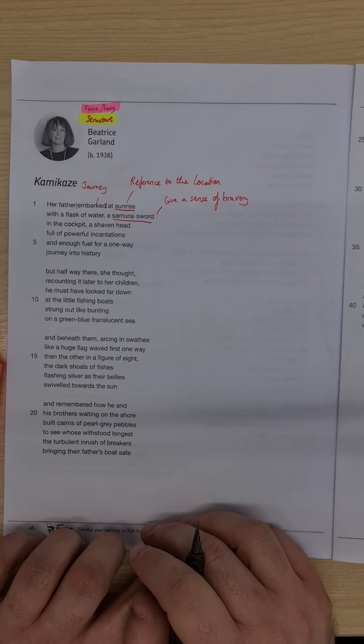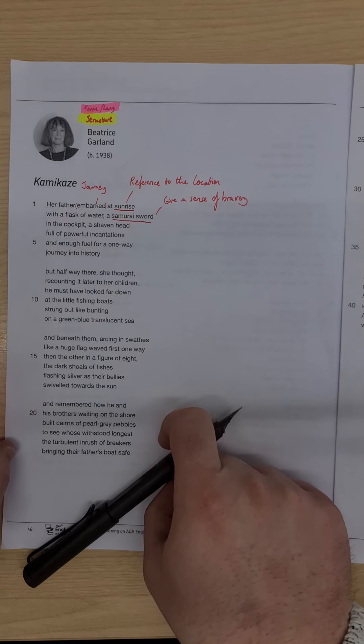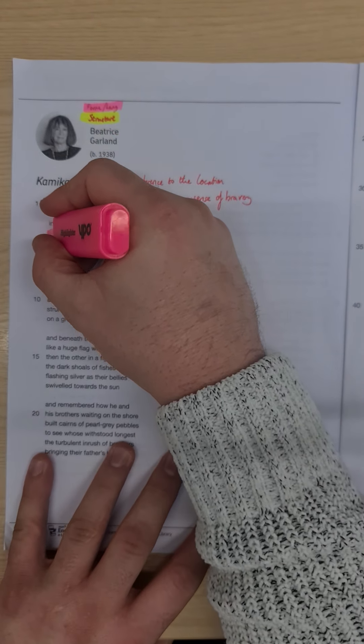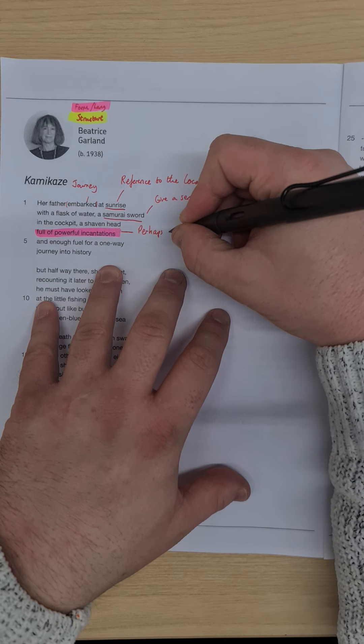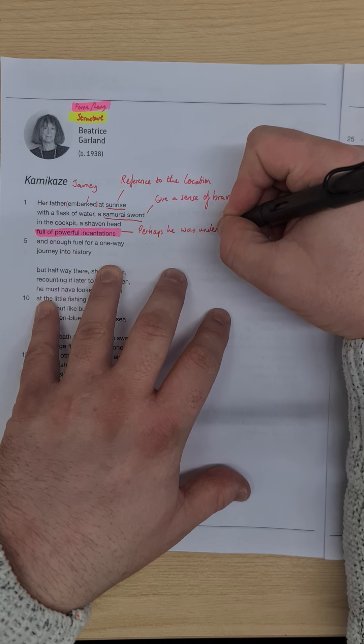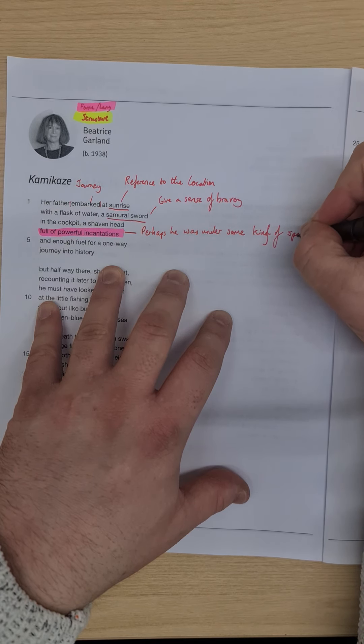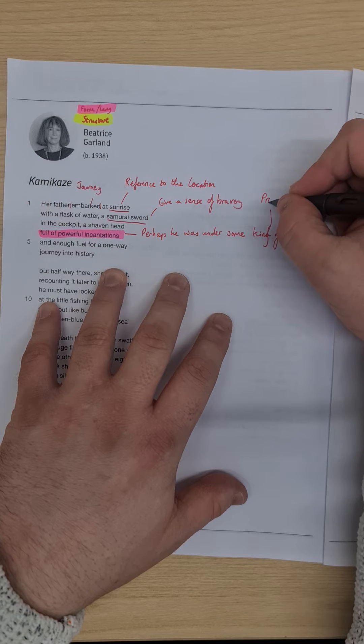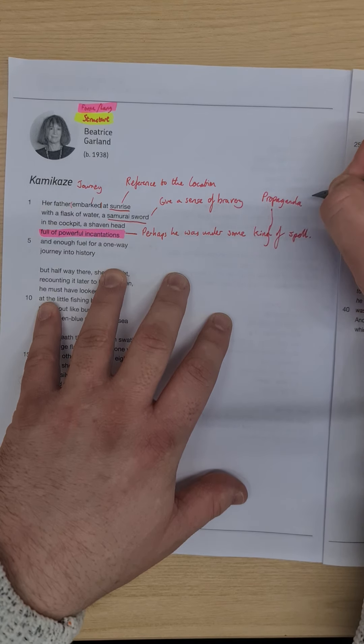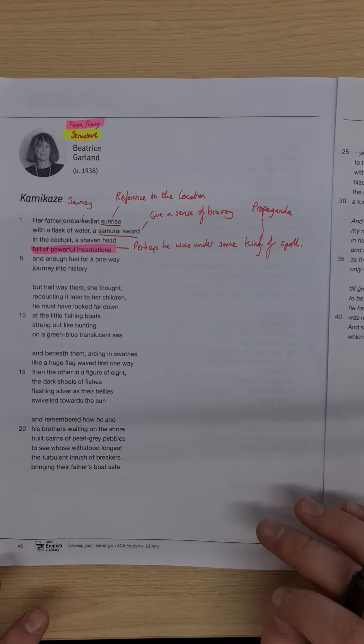A shaven head full of powerful incantations, and enough fuel for a one-way journey into history. And that 'full of powerful incantations' is really important. The fact that this metaphor here makes us feel that the pilot was full, perhaps he was under some kind of spell. We could link this to the propaganda, in that the government are almost casting spells on these men to make them want to do it. Remember, they were told that this was a huge honour to die for their country.